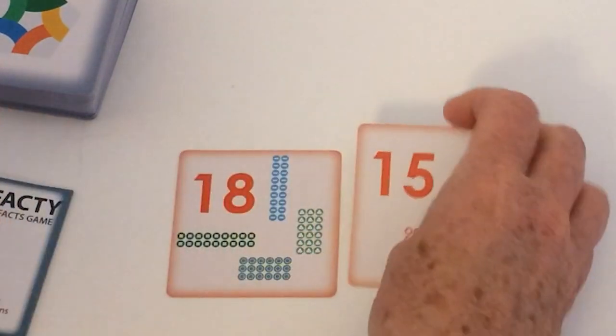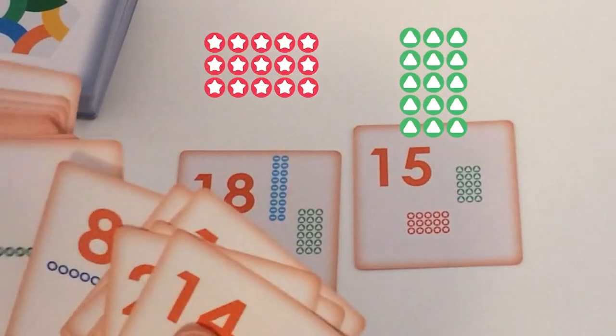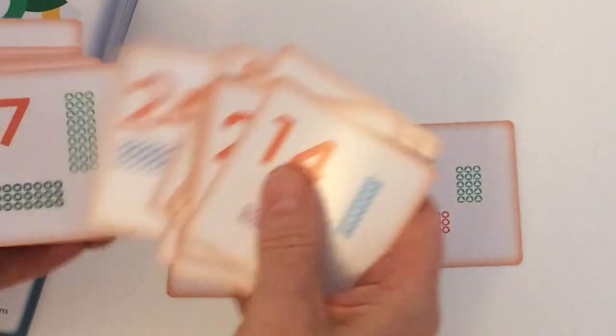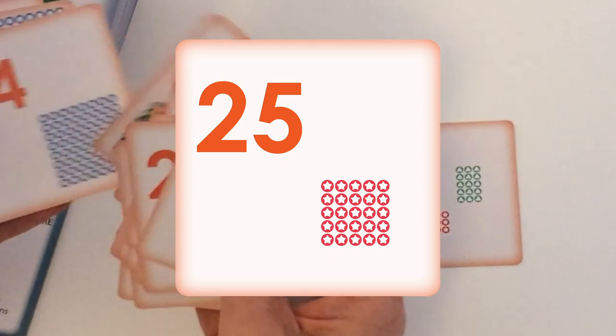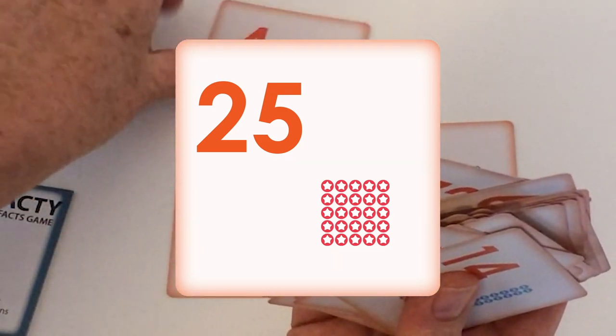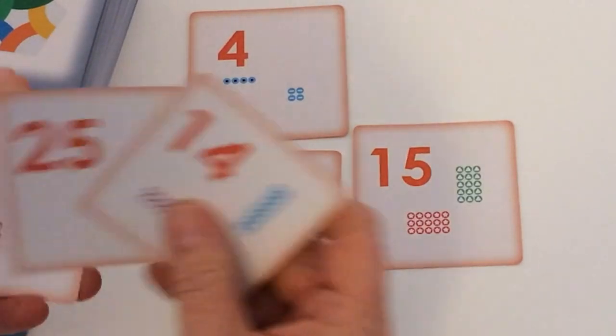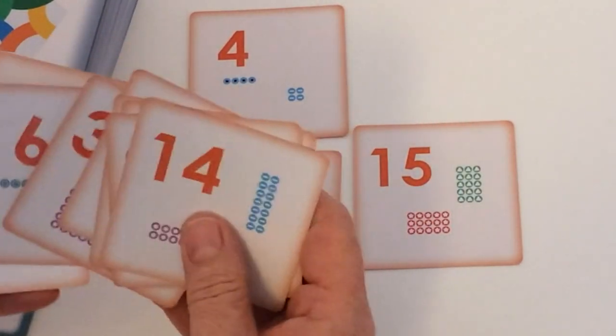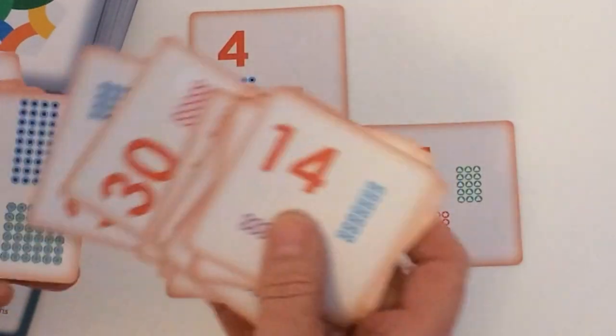You see that 15 here just has three rows of five and five rows of three. Some of them don't have as many. For example, four can have one row of four or two rows of two. We've chosen not to do the one times table because it's a bit trivial.